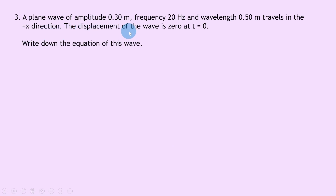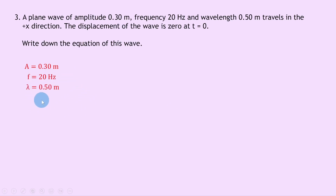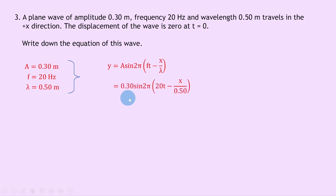Question 3 says a plane wave of amplitude 0.30 metres, frequency 20 hertz, and wavelength 0.50 metres travels in the positive x direction. The displacement is 0 at time t equals 0. Write down the equation of this wave. Amplitude A is 0.30 metres, frequency f is 20 hertz, wavelength lambda is 0.50 metres. Using y equals A sine 2 pi times ft minus x over lambda, we get y equals 0.3 sine 2 pi times 20t minus x over 0.5. You could also write the bracket as 20t minus 2x, since 1 divided by 0.5 equals 2.